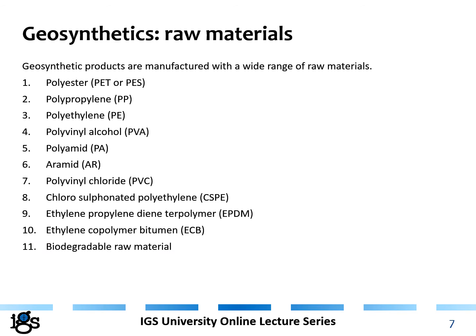Without going into detail on the raw materials, the typical materials used for geosynthetics include polyester, polypropylene, and polyethylene — likely the most widely used. But we also have PVA, polyamide, aramid, PVC, CSPE, EPDM, ECB materials, and even biodegradable raw materials. All of these can be used in combination or as standalone raw materials for a specific geosynthetic product.